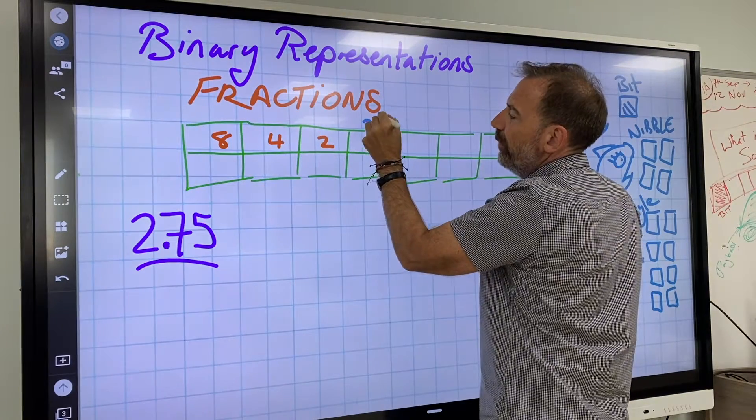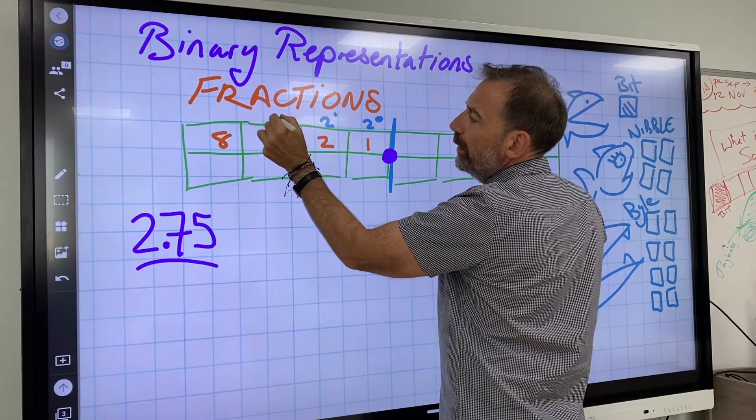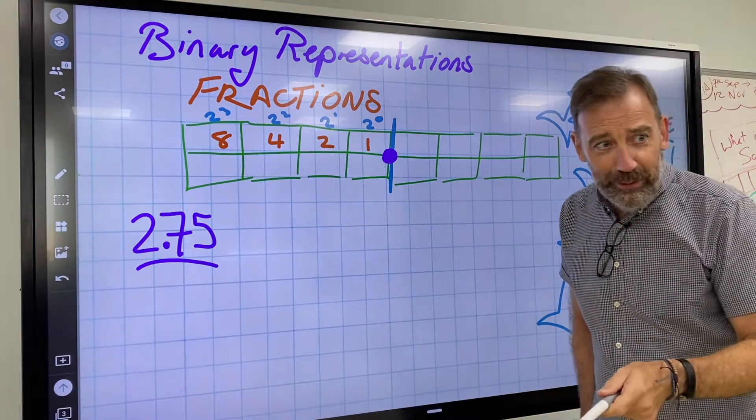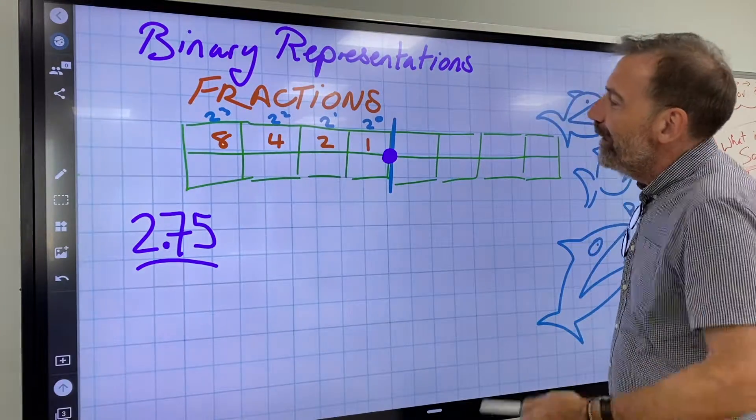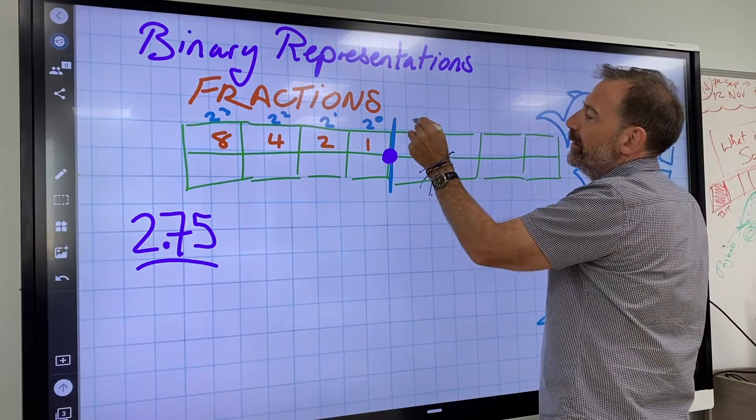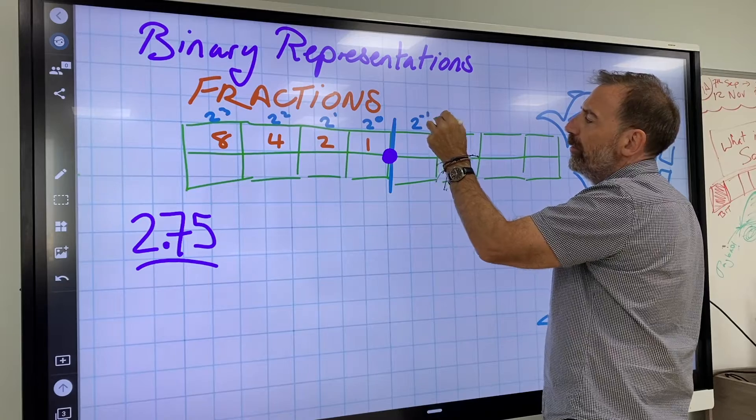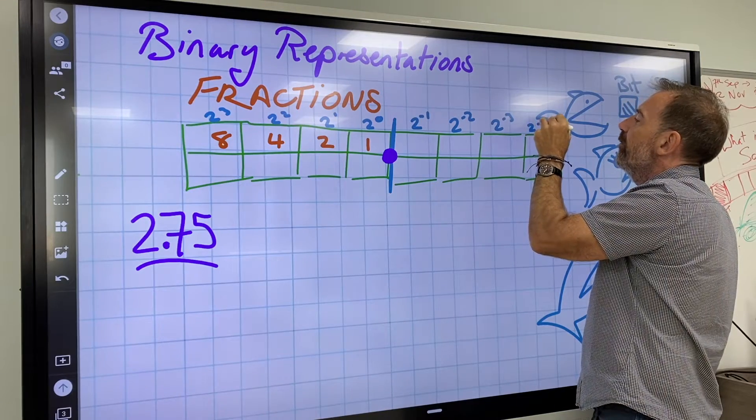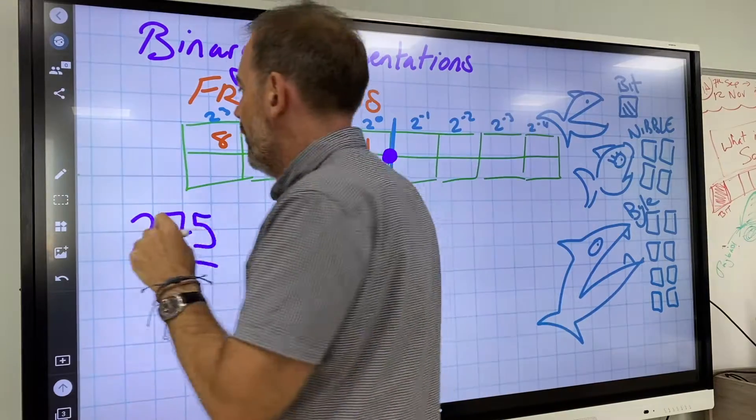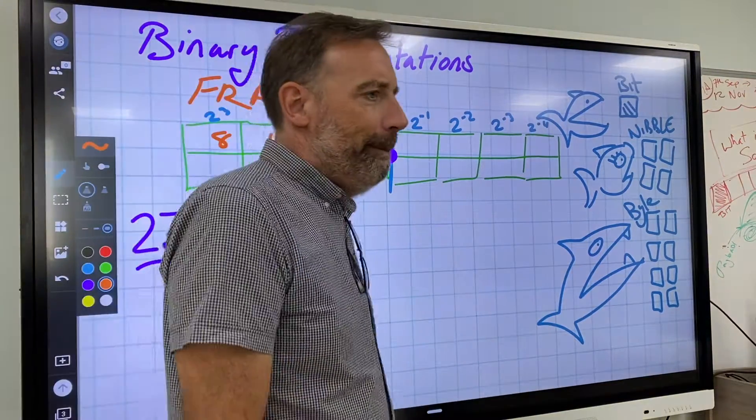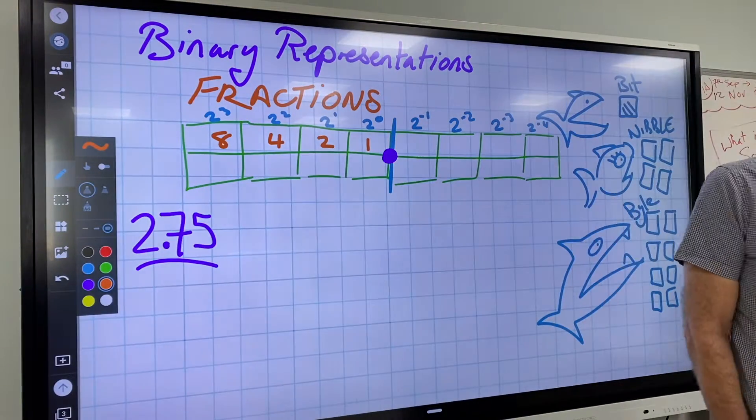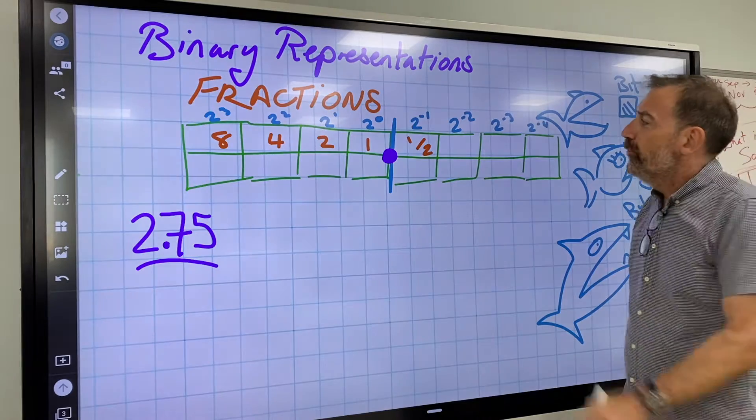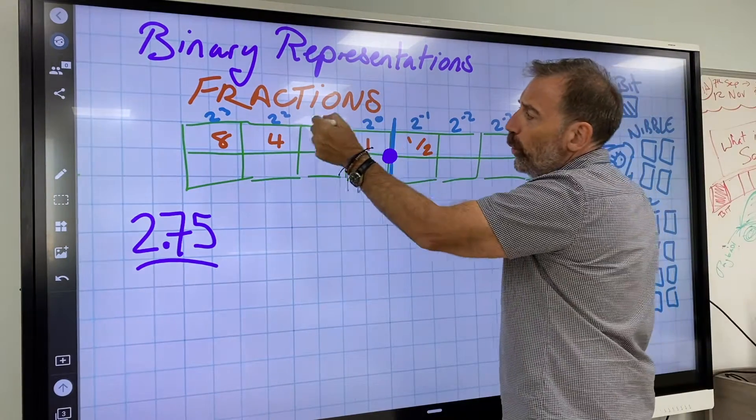This side is easy. This would be 2 to the 0, this would be 2 to the 1, this would be 2 to the 2, and this would be 2 to the 3, because 2 times 2 times 2. But this side: 2 to the minus 1, 2 to the minus 2, 2 to the minus 3, 2 to the minus 4. Any ideas what on earth I'm talking about?